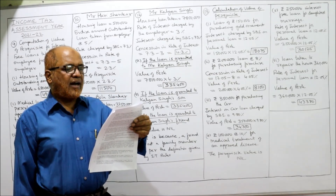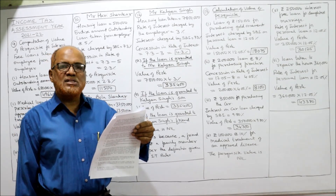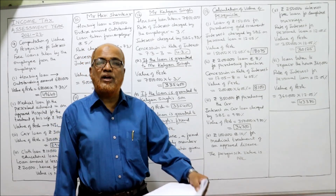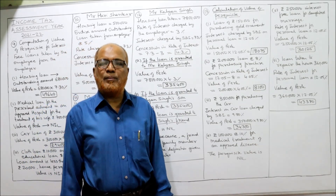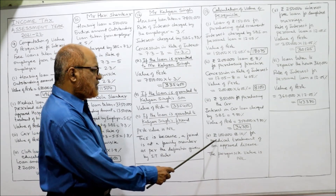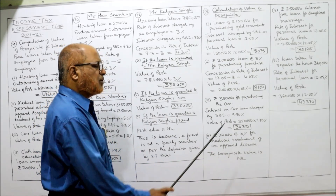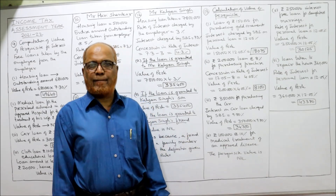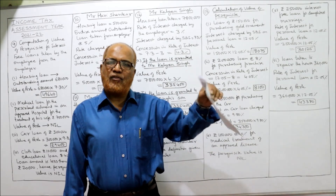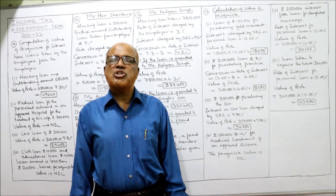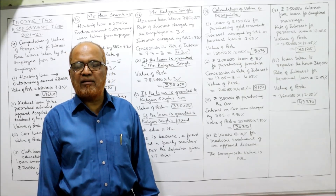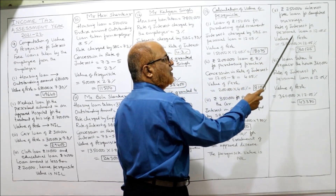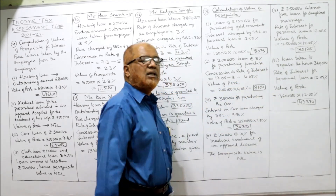Case 4: ₹1,00,000 at 10% for medical treatment of an approved disease — when the employee takes a loan from the employer for medical treatment of an approved disease, it is a tax-free perquisite, so the value of the perquisite is nil. Case 5: ₹2,50,000 interest-free loan for daughter's marriage — this is a personal loan, SBI personal loan rate 12.05%. Value of perquisite = ₹2,50,000 × 12.05% = ₹30,125.